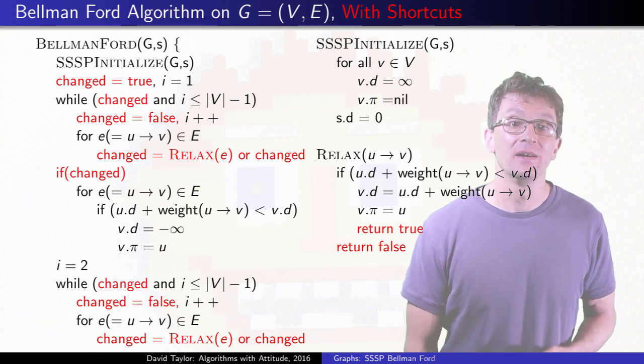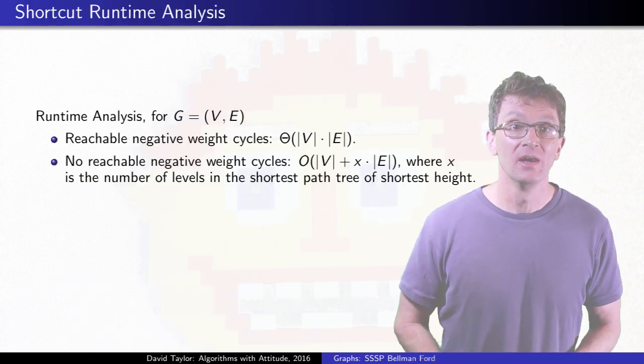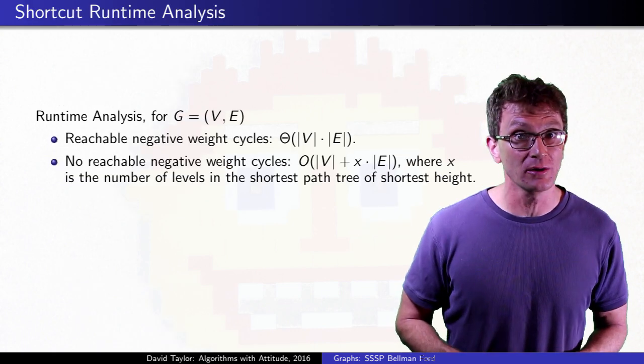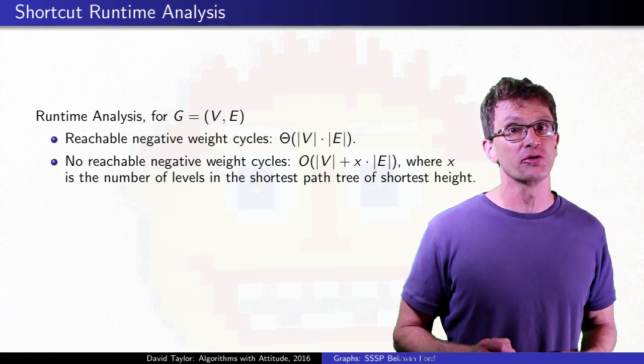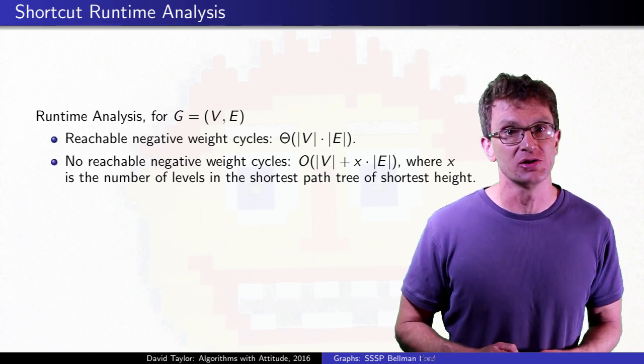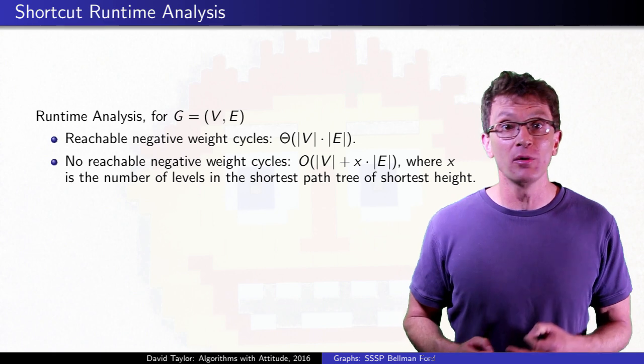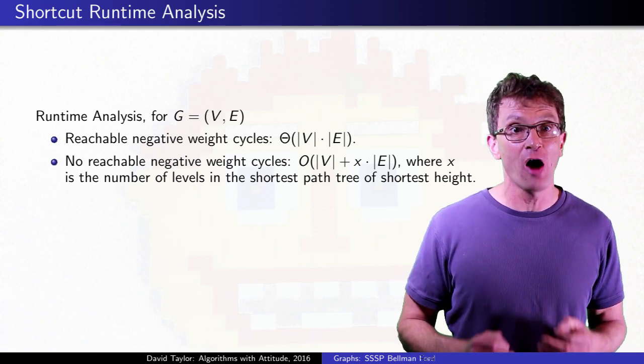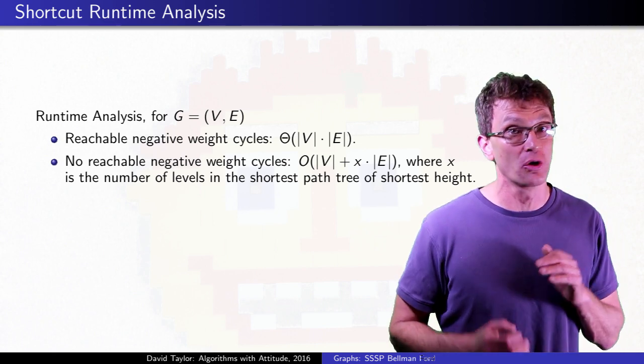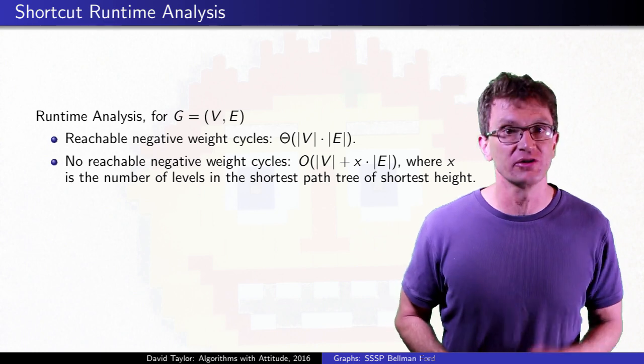The algorithm run time now depends on two things. If there are reachable negative cycles, we are in the worst case and will go through all rounds of relaxation. If not, the number of rounds we need depends on how many levels there are in the shortest path tree, with the fewest levels.